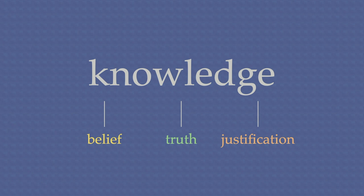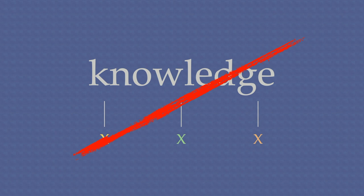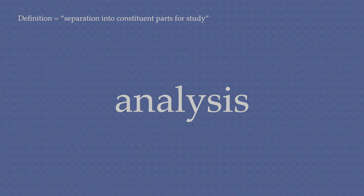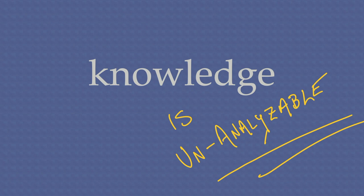Enter Timothy Williamson. Williamson argues that the JTB analysis is flawed because any analysis of knowledge will be flawed. Why? Because it assumes knowledge can be broken down into more basic parts. But what if it can't? An analysis is an attempt to understand something in terms of something more fundamental. But what if knowledge is the fundamental thing? This is Williamson's core idea — in a slogan: knowledge first.